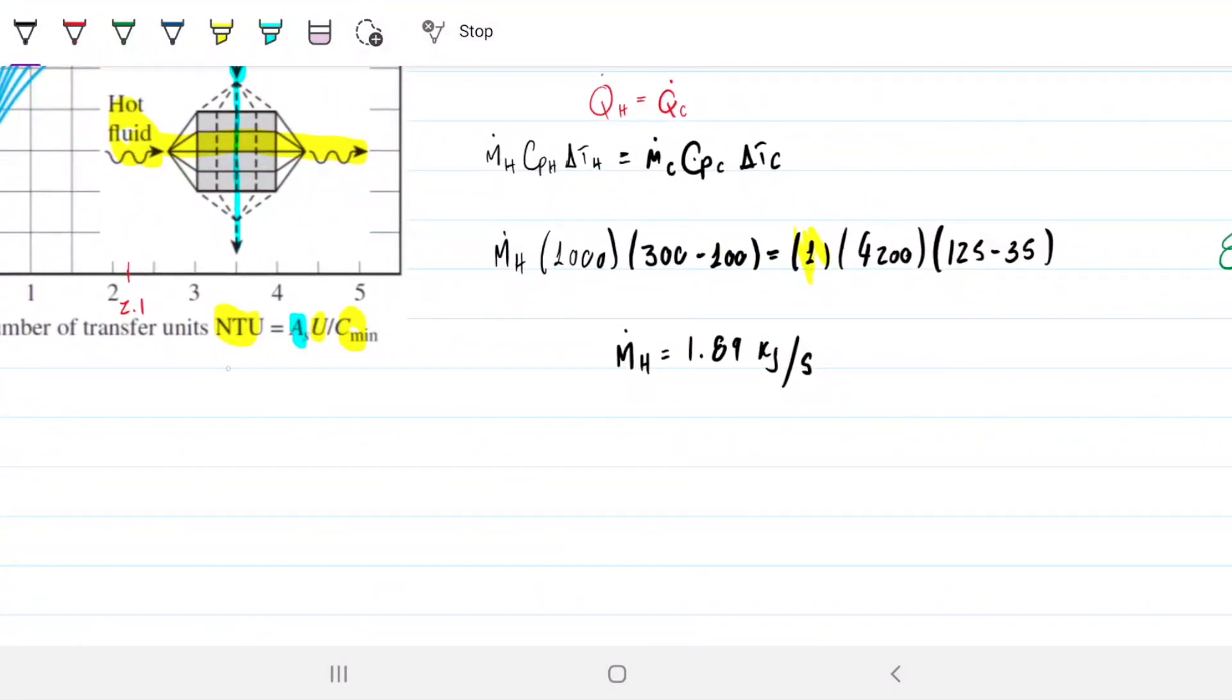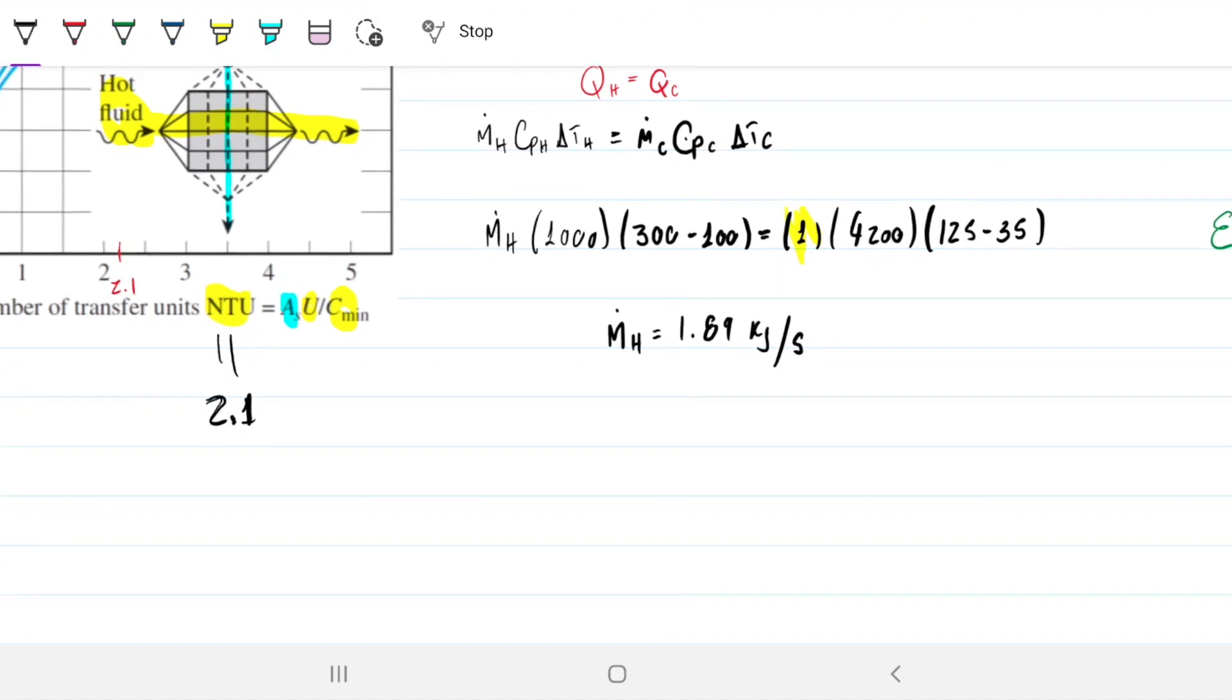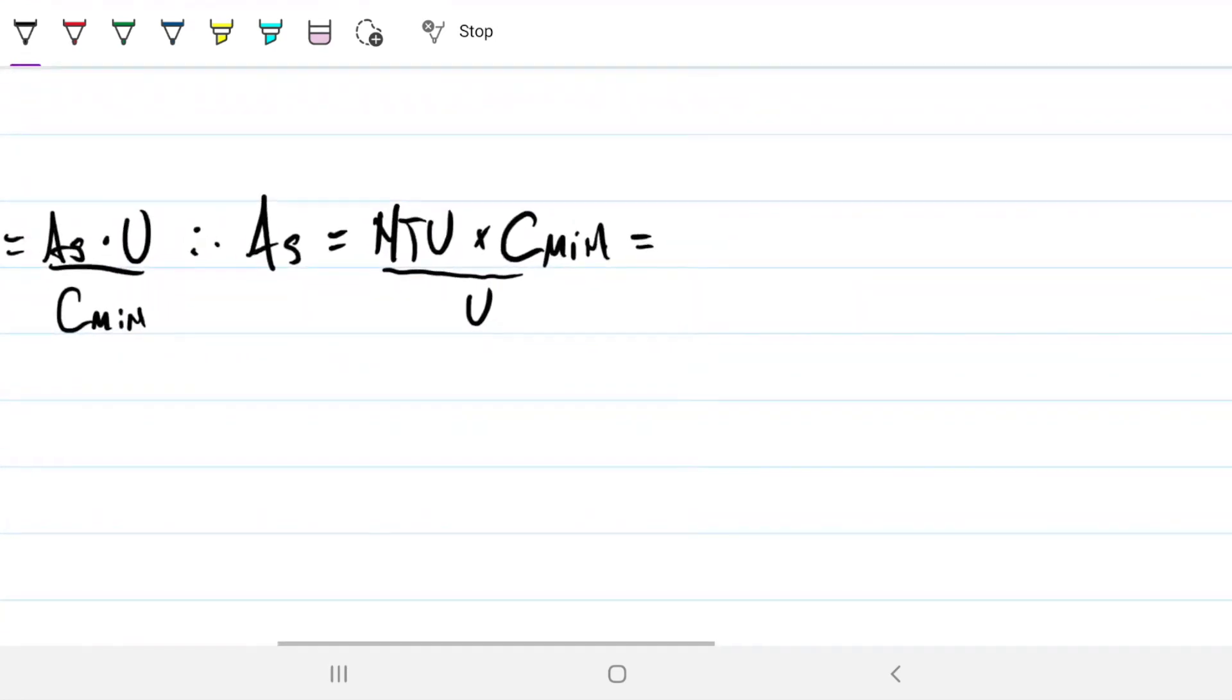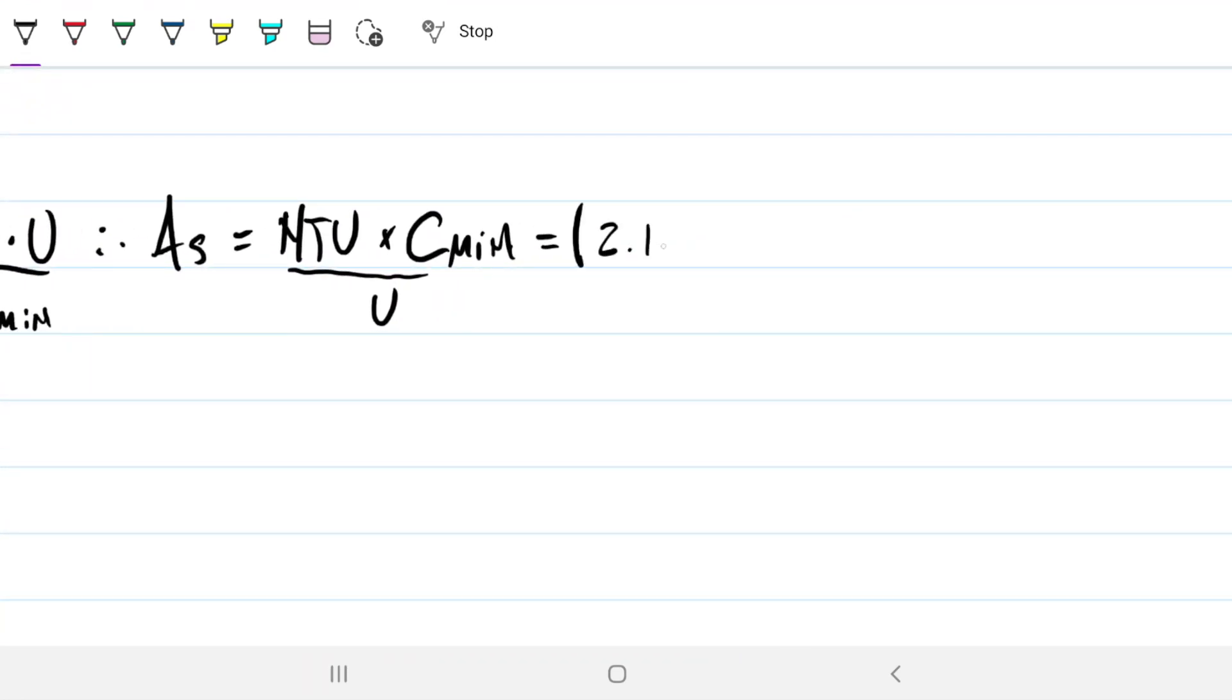So if I have my NTU from the graph, I have my NTU as 2.1, or any value around that, then I can solve my area. Because we know, just rewriting this equation here, NTU equals the surface area times the coefficient divided by C min, so therefore my surface area would be my NTU times C minimum divided by U. So let's plug in these guys, we have everything we need. My NTU is 2.1, my C min is 1.89 times 10 to the 3rd, and my overall heat transfer coefficient is 100.